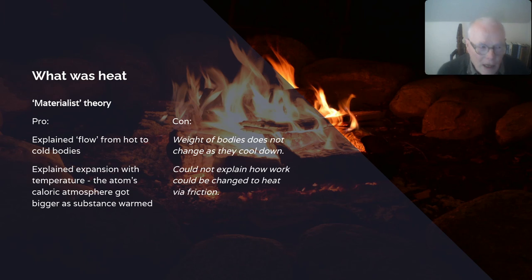What was the strength of the materialist theory? Well, that's the substance theory. Well, it explained the flow of heat from hot to cold bodies. It was like moisture passing from a damp cloth to a dry cloth. And it explained the expansion of things with temperature. In Dalton's theory, the atom's caloric atmosphere got bigger as a substance warmed, and therefore, as you heated steam up, the heat atmosphere around each atom got bigger, and the atoms therefore occupied more volume.